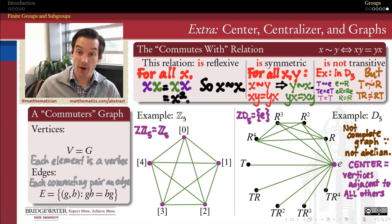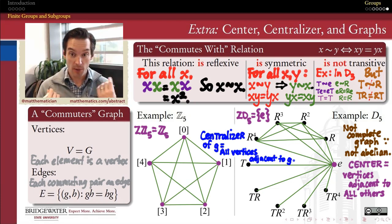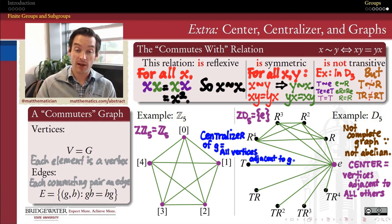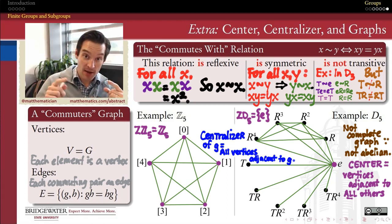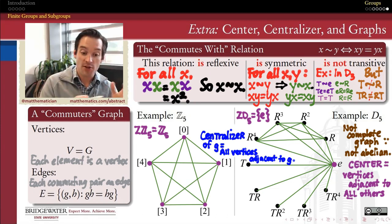That's how we read the center of a group off one of these graphs. For the centralizer of an element, we're asking: what commutes with me? We pick an element and ask what commutes with it. In our graph, we're looking for the vertices adjacent to that element — what is it connected to by an edge? Because graphs are not transitive, it doesn't count to connect something by two edges. I can't say R to the fourth is connected to T because of the path from R to the fourth through the identity to T. Adjacent means you must have an actual direct edge connecting those two vertices; otherwise, in graph theory, we call it a path rather than an edge. So the centralizer is the set of all vertices that share a direct edge with the given element.